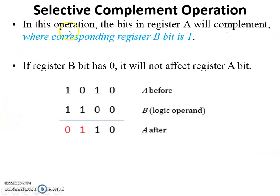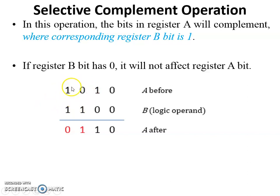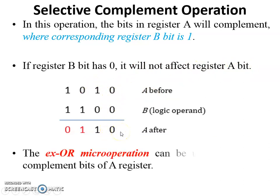The second is selective complement micro operation. In this operation, the bits in register A will be complemented where the corresponding register B bit is one. For example, the two most significant bits of B are one, so the complement is performed on the corresponding bits of register A — one becomes zero and zero becomes one. The remaining bits, where B bit is zero, are not affected and remain as-is. This is a kind of XOR micro operation used to selectively complement bits of a register.